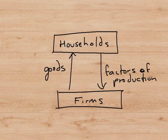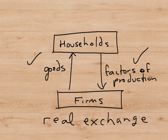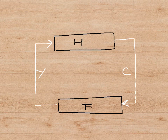Now that we have seen what the five major sectors of the economy do, let's start with households and firms. Households supply the factors of production to firms — land, labour, capital, and enterprise — and in return, firms provide goods for households to consume. This is the real exchange between households and firms. When we draw a picture of the economy, instead of looking at the real exchange, we look at the exchange of money between households and firms, which is called the circular flow of money.